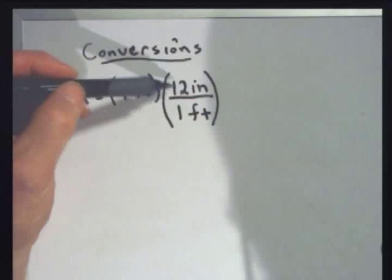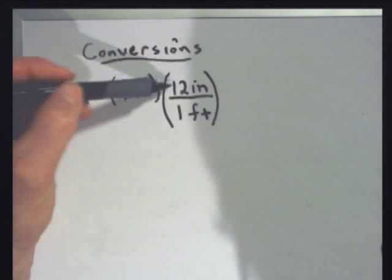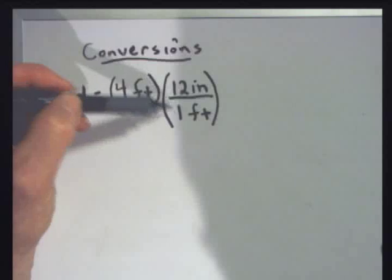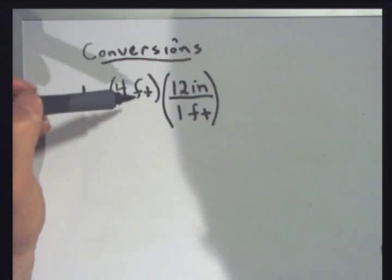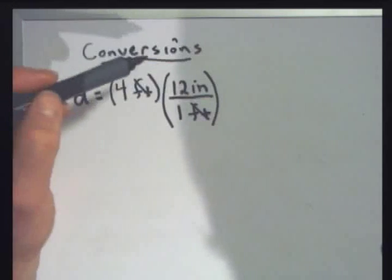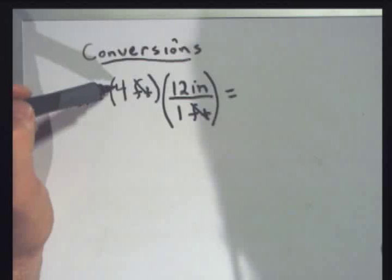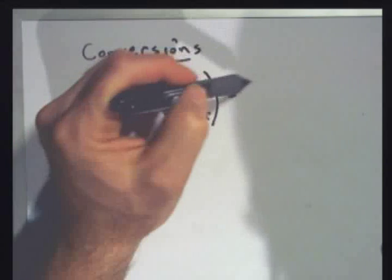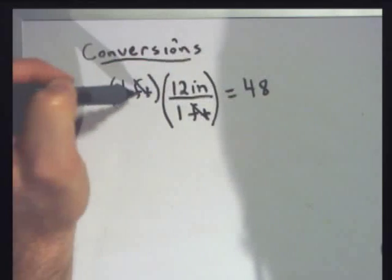What I'm really doing is multiplying 4 feet by 1, because the thing on top — 12 inches — is the same as the thing on the bottom — 1 foot. So I'm not changing the distance at all; I'm just changing the units. Feet will cancel. Cancel those units out to make sure you got it right, then multiply the numbers. I got 4 times 12 is 48 inches.